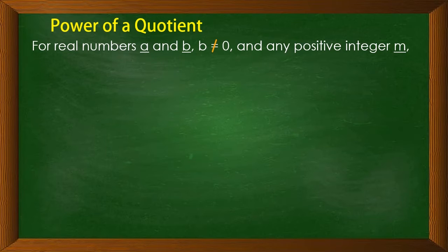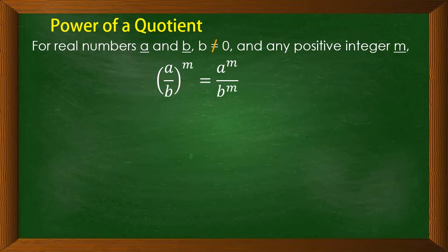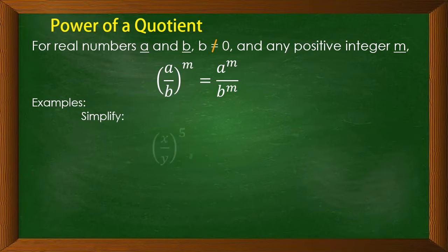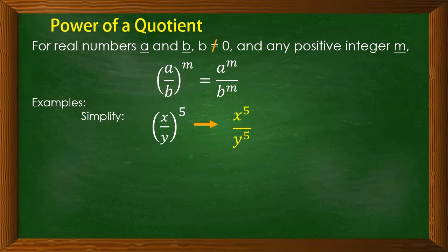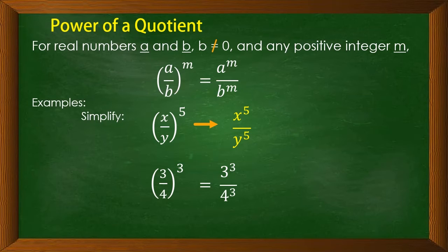The power of a quotient: for real numbers a and b where b is not 0, and any positive integer m, (a over b) to the power of m — distribute the exponent — equals a raised to m over b raised to m. For example, (x over y) to the power of 5 equals x raised to 5 over y raised to 5. Same as (3 over 4) to the power of 3 equals 3 raised to 3 over 4 raised to 3, or 27 over 64.